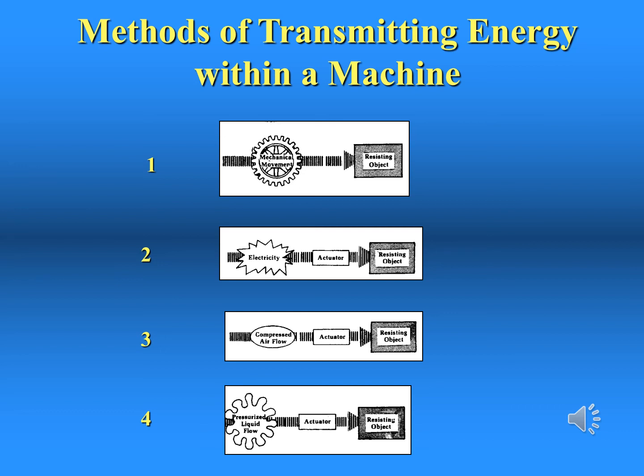These are the most common forms of energy found in manufacturing. Mechanical includes mechanisms that have gears, chains, belts, and pulleys. Electrical, still the most common, is the easiest to transmit. And of course, any system that uses hydraulics or pneumatics is known as fluid power.